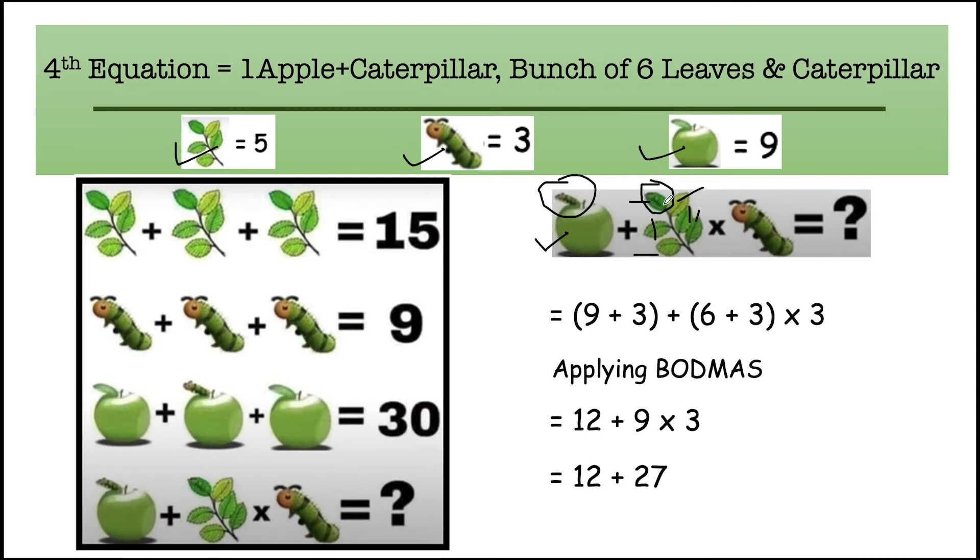We have one, two, three, four, five, and six leaves present in this picture, and one caterpillar is on the third leaf sitting on it, and there is one caterpillar here. Now putting all the values here: one apple is equal to nine, one caterpillar is equal to three. For the six leaves, we have to put this value as six, and there is one caterpillar also, so we have to add three in it.